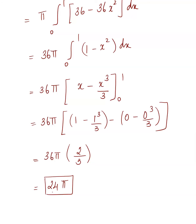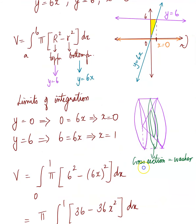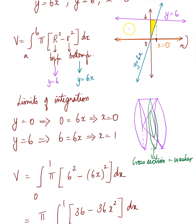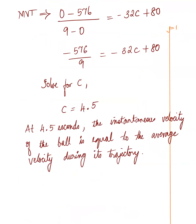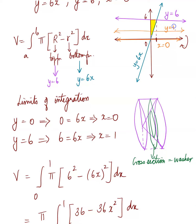These examples show the disk and washer methods. If you encounter problems with a slightly different axis of rotation, don't panic. The radius is always the height of the function from wherever you're rotating. If rotating about y = 1 instead of the x-axis, the radius is measured from y = 1, not from 0. The next video will be on cylindrical shells.